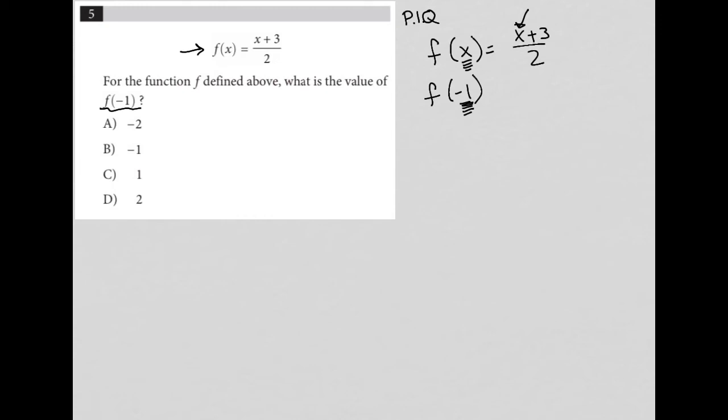So f of negative 1 simply is substituting x out for negative 1 and solving from there. So our numerator here, negative 1 plus 3 is 2, and 2 divided by 2 is 1.